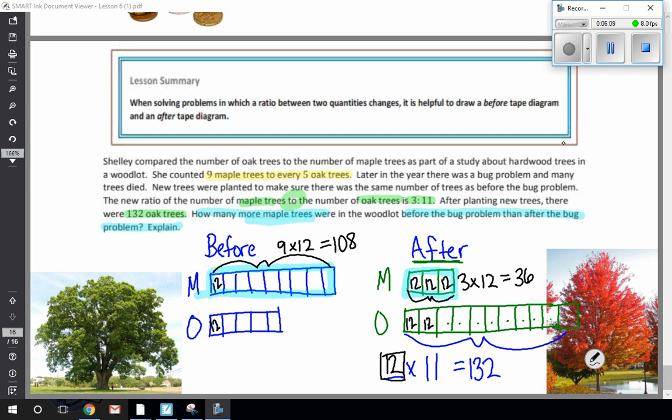So to answer the final question, it wants to know how many more maple trees were there before. So all we're going to do is subtract the before from the after. So I have one hundred eight, let's see, I'll write it over here, minus the thirty-six that are there now. Eight minus six is two. Ten minus three is seven. So there are seventy-two more maple trees now.